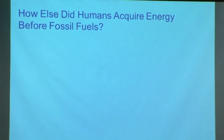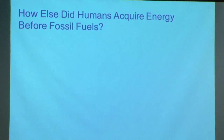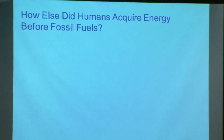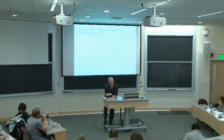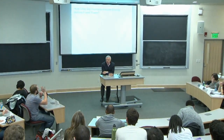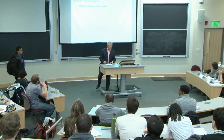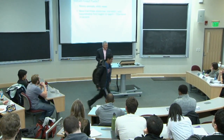That's one source of energy humans used to supplement their own before we began using fossil fuels in quantity. What else did we use? Student: Water — waterpower, water wheels of various kinds. Student: Wind, sailing ships, windmills. Student: Horses — animals. And the availability of all of those things varies a lot.